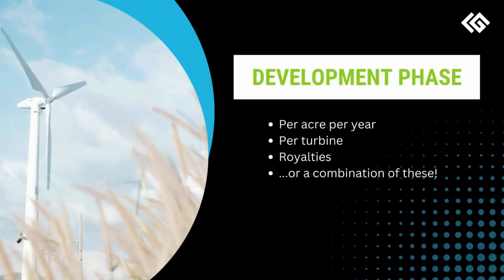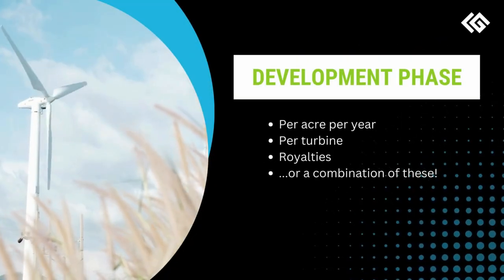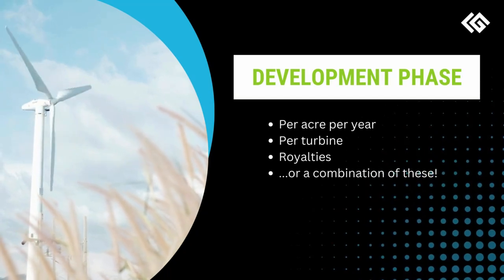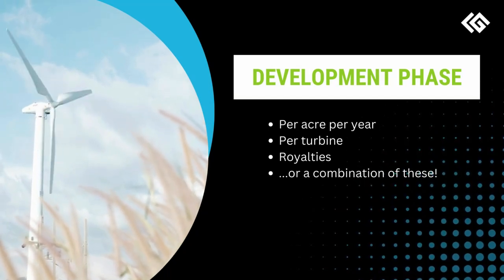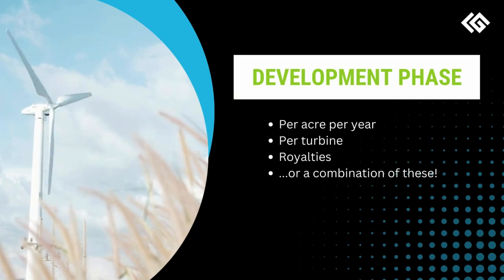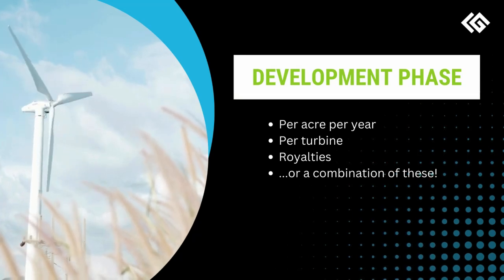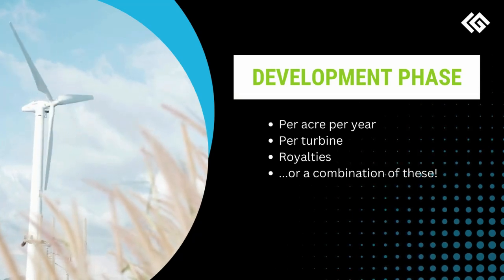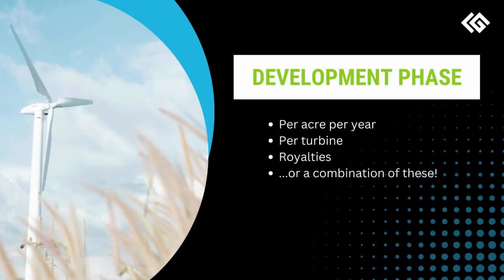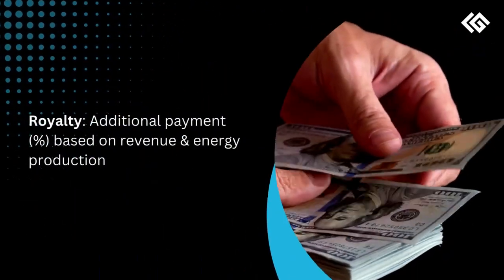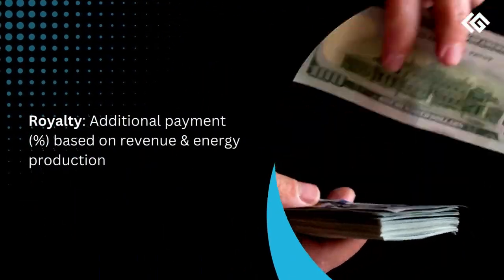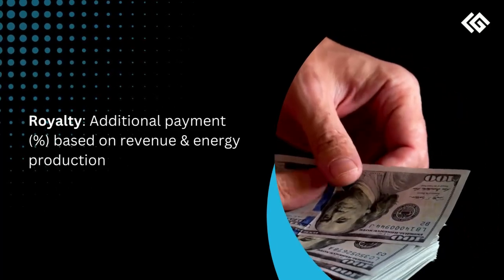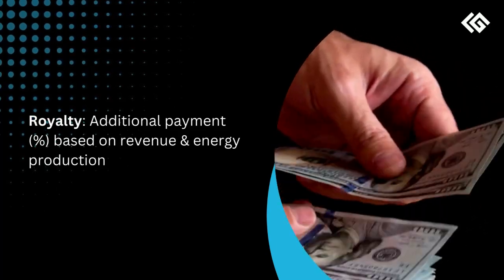Generally, after the option period, the lease enters the development phase where the turbines and supporting infrastructure are placed on the land. Landowners are paid for wind leases on a per acre basis or a per turbine basis with royalties. It is most common to be paid per turbine per year with royalties.